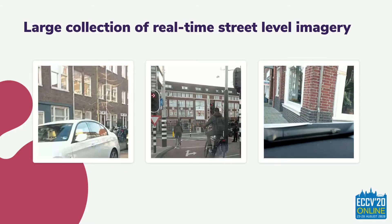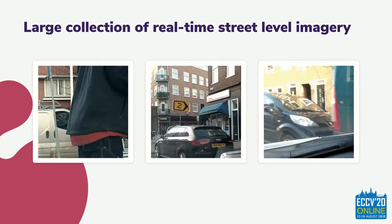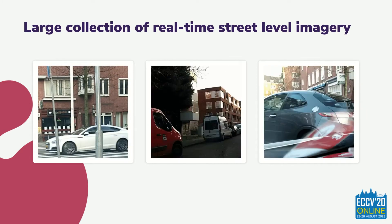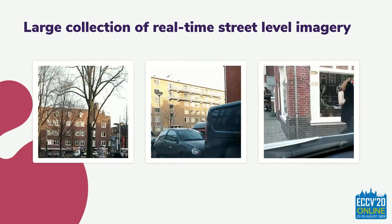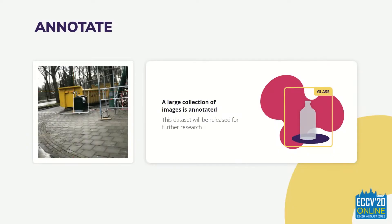Due to the incentive local governments have for obtaining actionable intelligence, this system will create a large collection of real-time street-level imagery. Anonymous visual data is annotated by experts in city maintenance to provide the research community with real-world training data. Any model that can perform inference on this data can easily be used in the system because of its modular design.